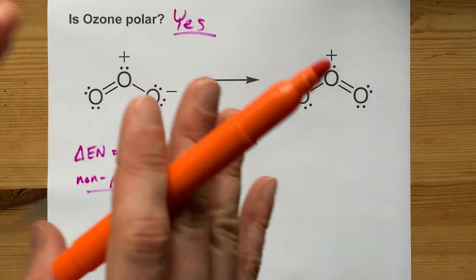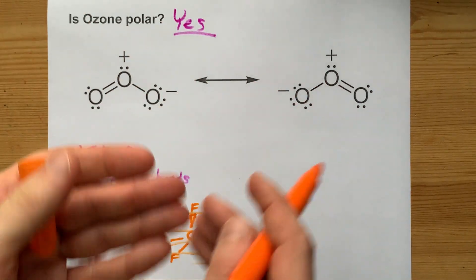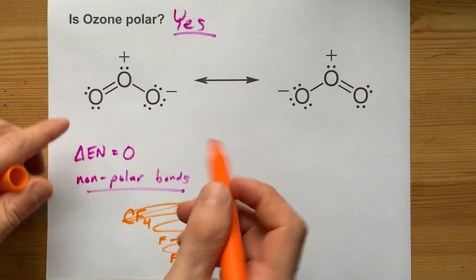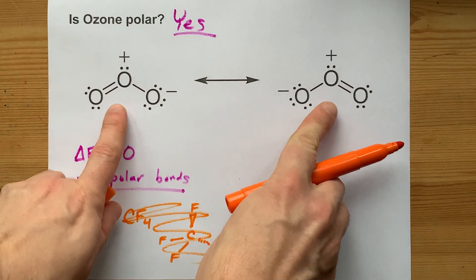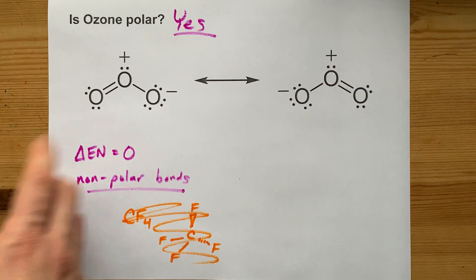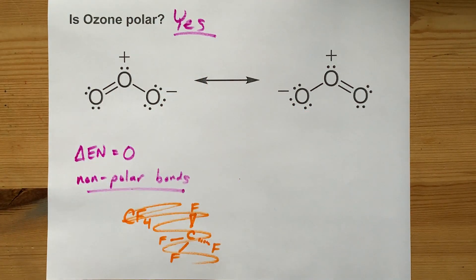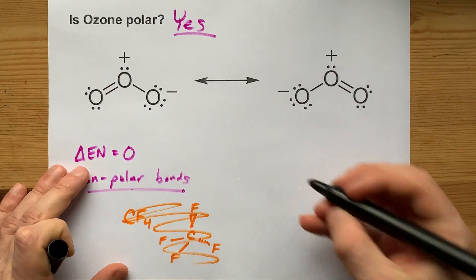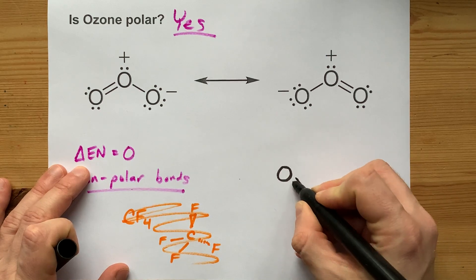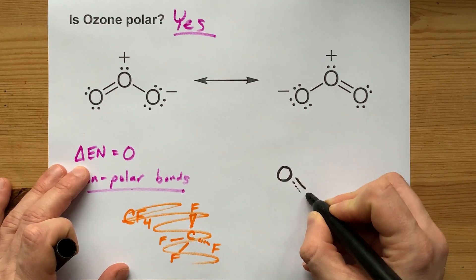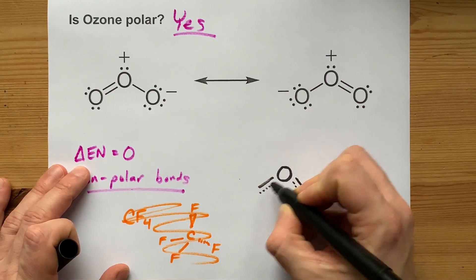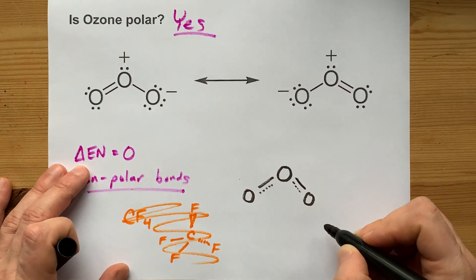Polar molecules have an uneven distribution of electrons. What we have here is actually two resonance structures of ozone. Let me draw what we call the resonance hybrid: it's an oxygen in the center, with a one-and-a-half bond in one direction, and a one-and-a-half bond in the other direction.